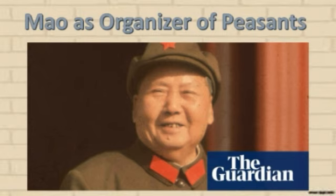Mao as organizer of peasants: Mao concentrated his energies on organizing the peasantry. When the relationship between the Kuomintang and the Communist Party broke down, a few hundred communists led by Mao retreated into the wild mountains. They stayed there for the next seven years as Mao's army gradually grew.